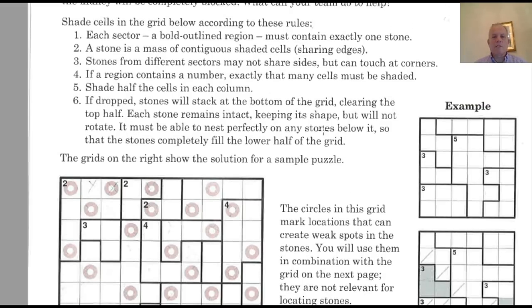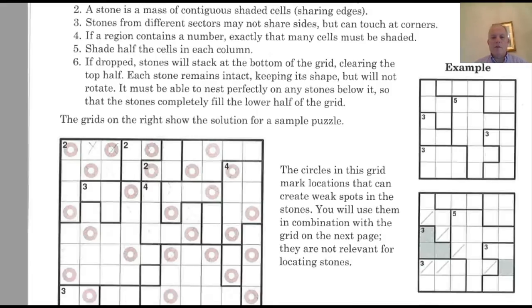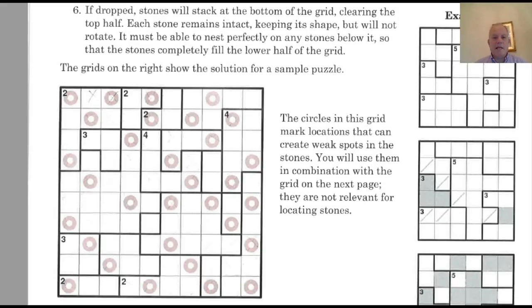If dropped, stones will stack at the bottom of the grid, clearing the top half. Now the grid we're working on is 10 by 10. Each stone remains intact, keeping its shape, but won't rotate. It must be able to nest perfectly on any stones below it, so that the stones completely fill the lower half of the grid.